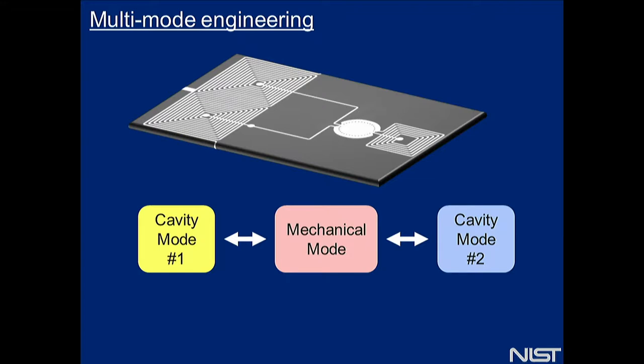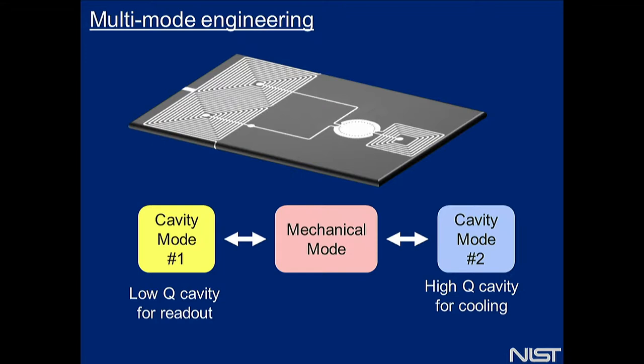To give you an example of one type of experiment: we have a single drum — in this red bubble — as our mechanical mode of interest, and we're going to couple it to two different LC resonators. The idea is to make one a very low-Q cavity — a fast cavity that's good for readout — and make the other a high-Q cavity deep in the resolved sideband regime, so you can use one for state preparation and the other for readout.